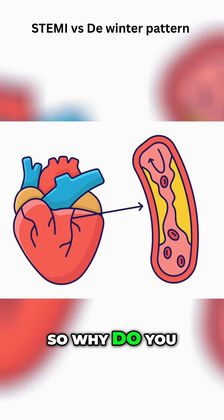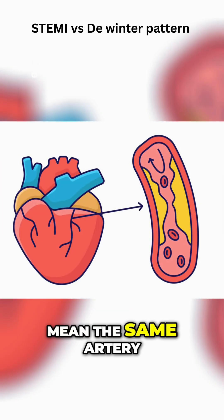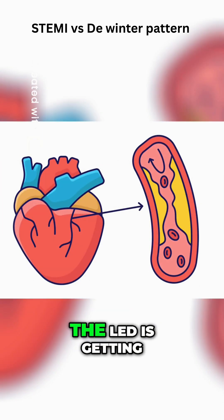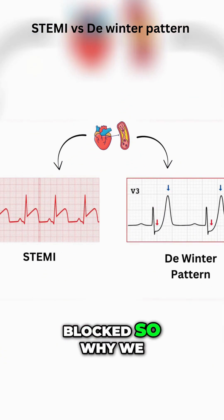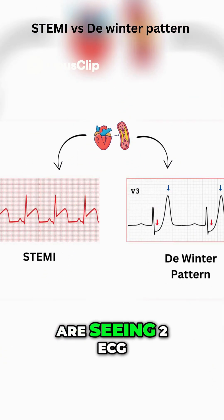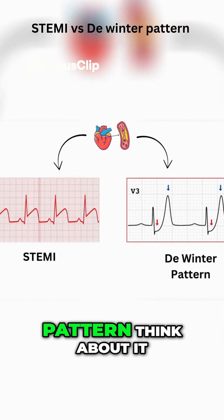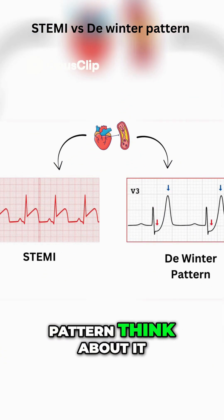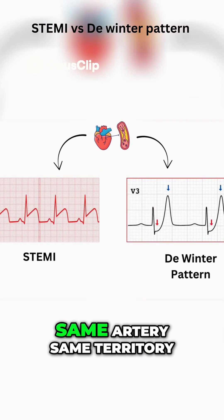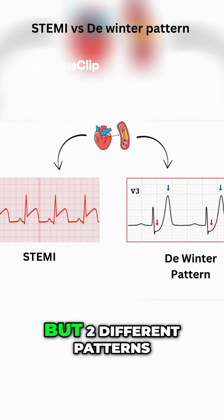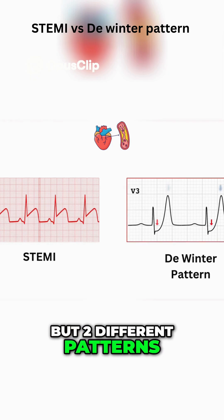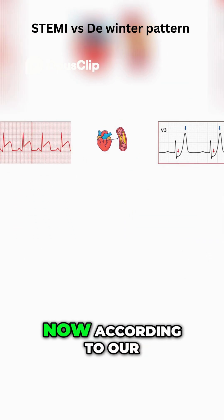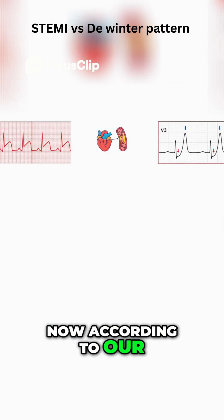So why do you think that is? The same artery — the LAD — is getting blocked, so why are we seeing two different ECG patterns? Think about it: same artery, same territory, but two different patterns.